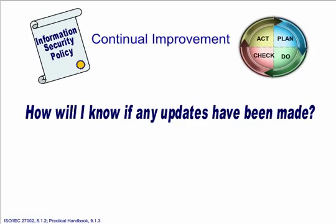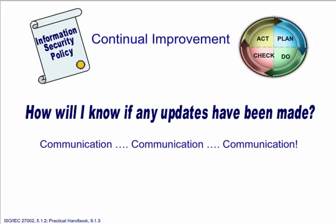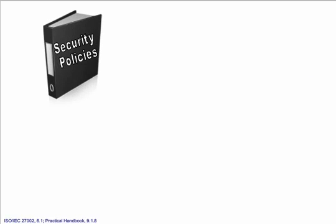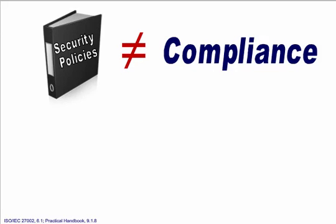How will I know if any updates have been made? All updates to the information security policy should be communicated in a way that allows stakeholders to clearly understand the change, especially changes where they have new responsibilities or procedures to follow. Documentation of an information security policy and related regulations, procedures, guidelines, and standards does not automatically create an organization that adheres to the security measures.